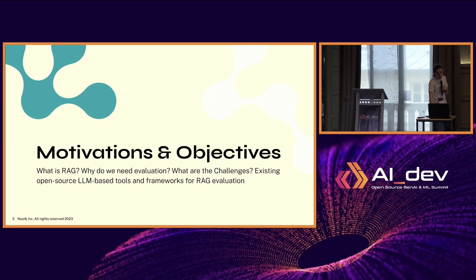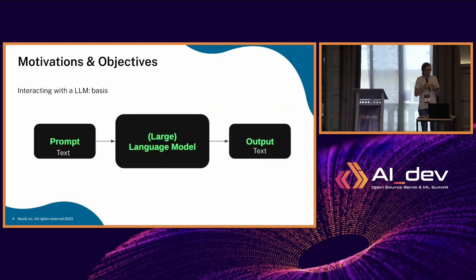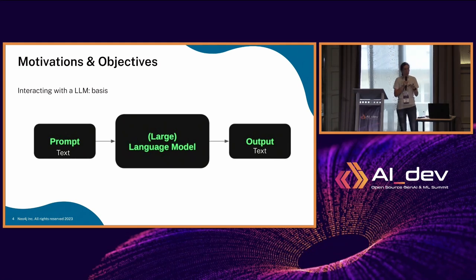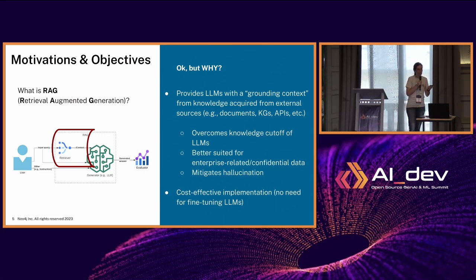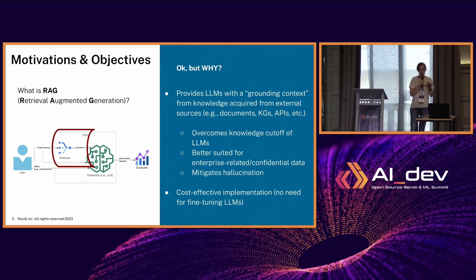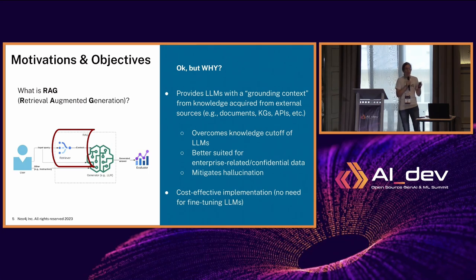Motivations. The basic way to interact with an LLM is you have a text, you provide it to the model, and the model outputs some text. So why are we trying to make things more complicated than that? Because when you start to have a RAG pipeline, you start having this kind of architecture where you have some intermediate step between the user question and your LLM.